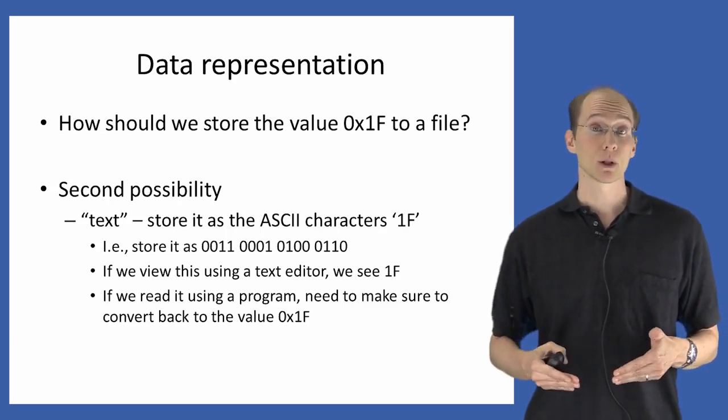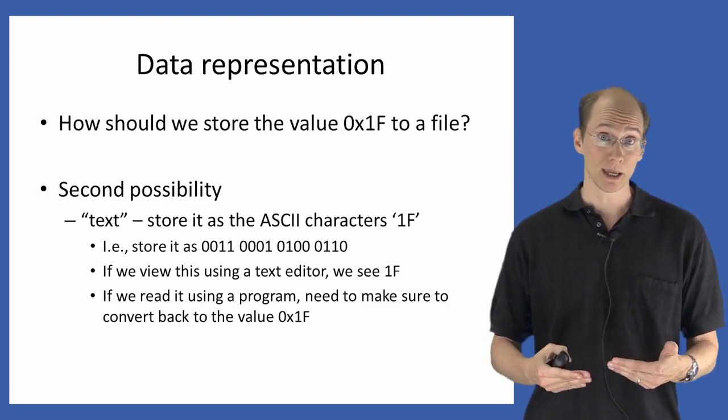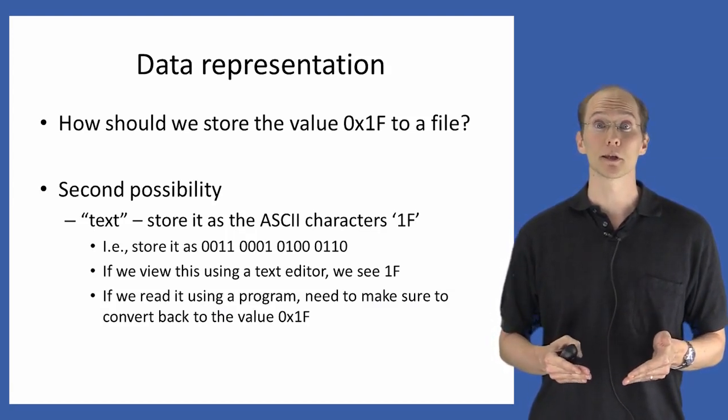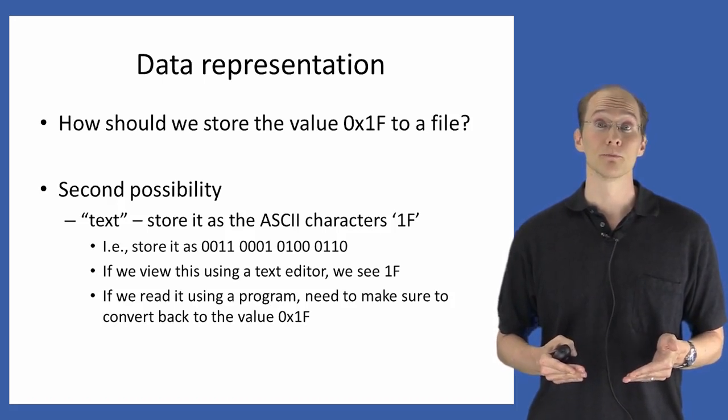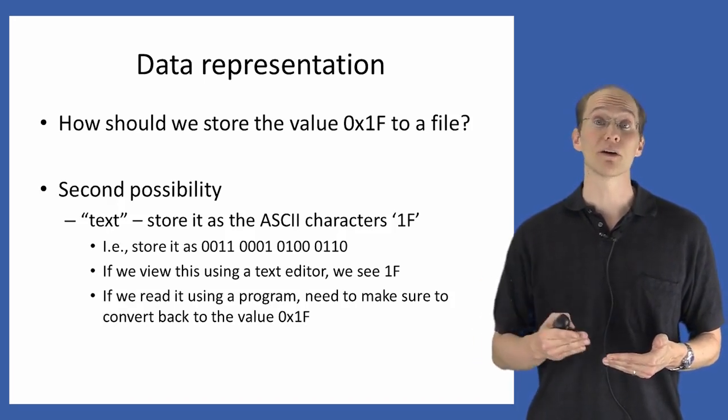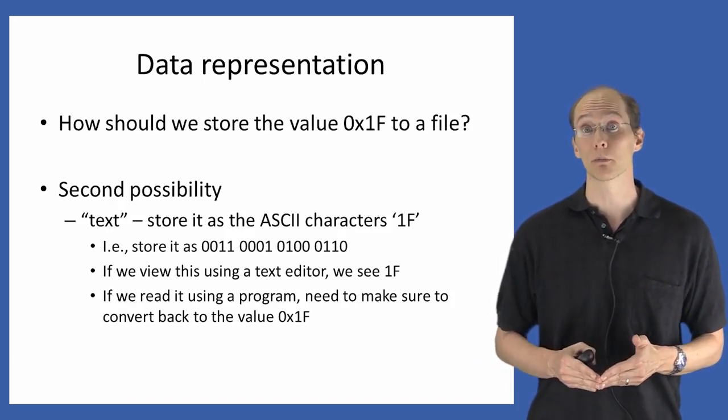If we store the ASCII characters 1F to a file, then what we'll end up actually storing in terms of bits is 00110001 01000110, which I obtained just by looking up the character 1 in the ASCII file, the character F in the ASCII file, and writing out their corresponding representations.